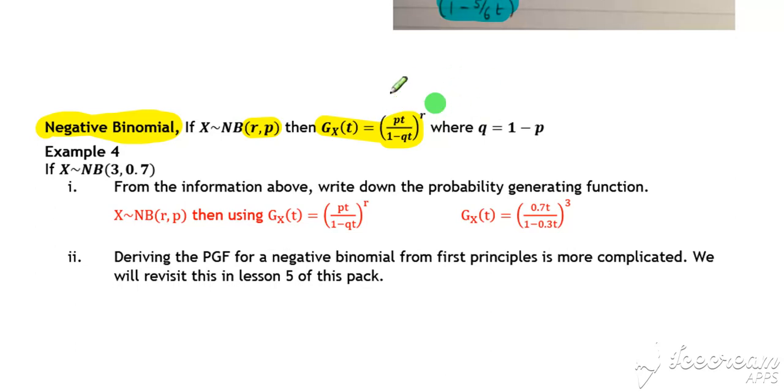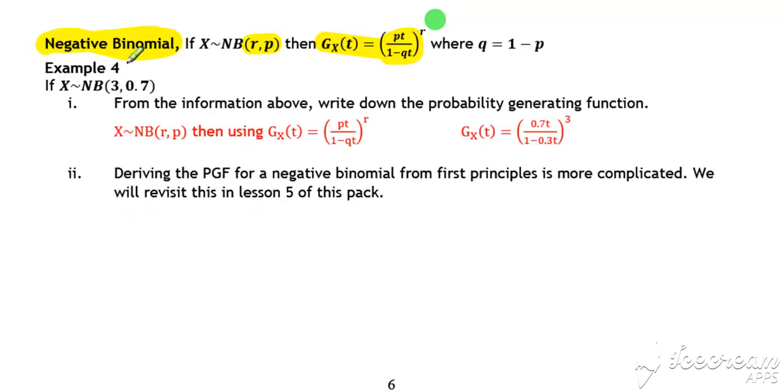So it's worth just being aware of, it's worth mentioning. Here we've got a negative binomial with r value 3 and p value 0.7. So again, just using the quotable result, we can substitute in our p value and our n value and get our formula.